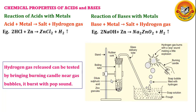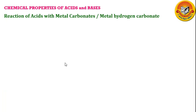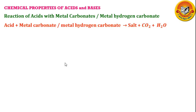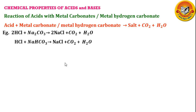So we have seen that when acid reacts with metal or when base reacts with metal, we get salt and hydrogen gas. Now the second reaction: reaction of acids with metal carbonate or metal hydrogen carbonate. When acid reacts with metal carbonate or metal hydrogen carbonate, we get salt, carbon dioxide, and water. For example, hydrochloric acid with sodium carbonate (Na₂CO₃) gives sodium chloride plus carbon dioxide plus water. Similarly, hydrochloric acid with sodium hydrogen carbonate gives sodium chloride, carbon dioxide, and water.